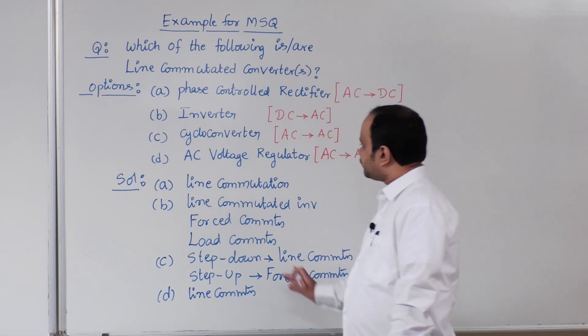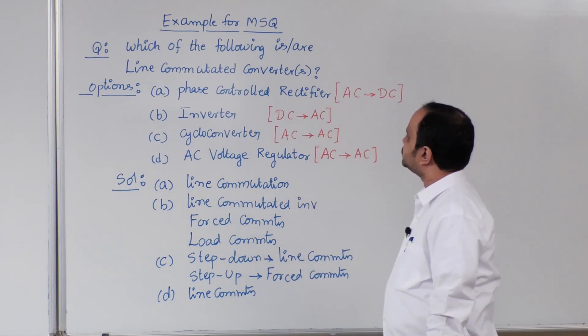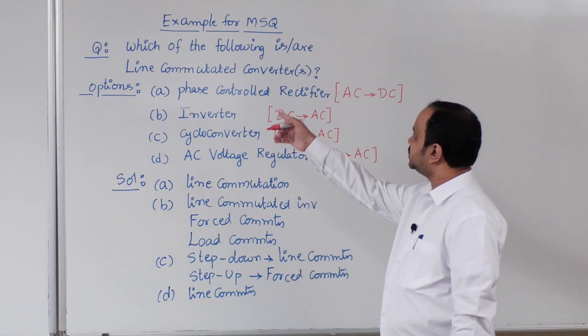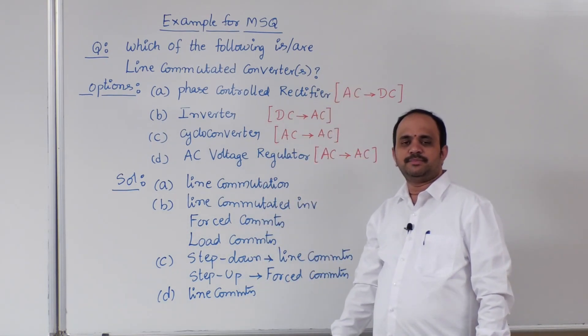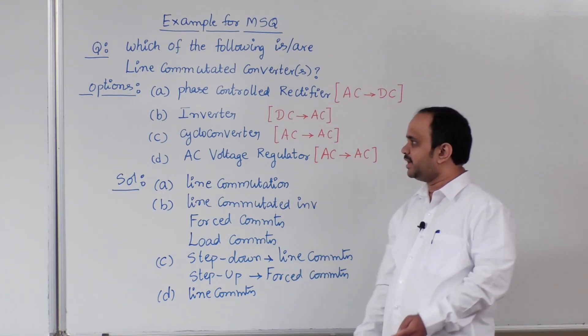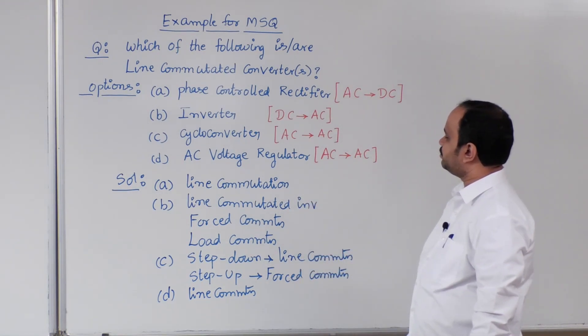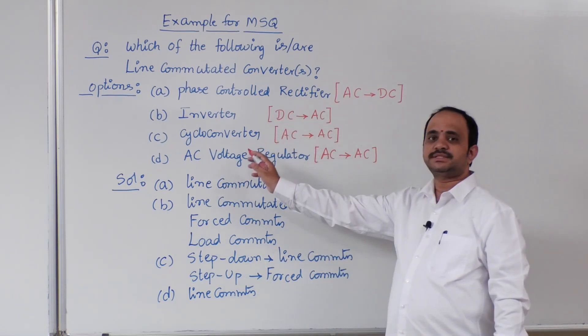Suppose, the same question we can modify in another way also. Which of the following has forced commutations are correct. Suppose, if the question is asked in that way, then you can say from this explanation, the answer would be inverter and cycloconverter.